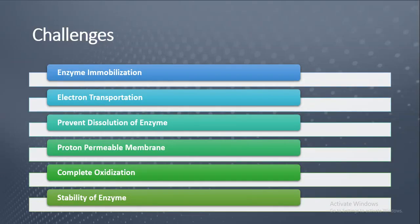There are certain challenges in making an enzymatic biofuel cell. The first challenge is enzyme immobilization — choosing which method to use. The second is electron transportation — how electrons are transported through the external circuit. The third is dissolution — preventing the enzyme from dissolving inside the cell or buffer. The fourth is the need for a proton-permeable membrane. The fifth is whether the fuel or substrate is completely oxidized. The sixth is the stability of the enzyme inside the cell and how long it remains stable.